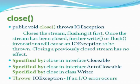Close: public void close() throws IOException. Closes the stream, flushing it first. Once the stream has been closed, further write or flush invocations will cause an IOException to be thrown. Closing a previously closed stream has no effect. Specified by close in Closeable, AutoCloseable, and class Writer. Throws IOException if an I/O error occurs.